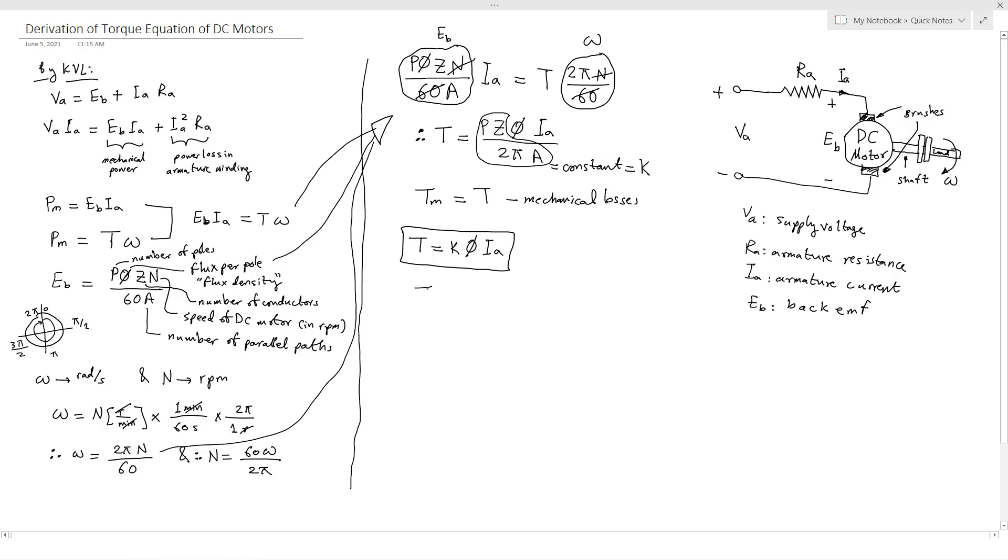And in some references they use this alternative equation: T equals D IF IA. IF is field current, and D is also a constant, why? Because phi the flux density is proportional to IF, and we will see this one in DC motors.